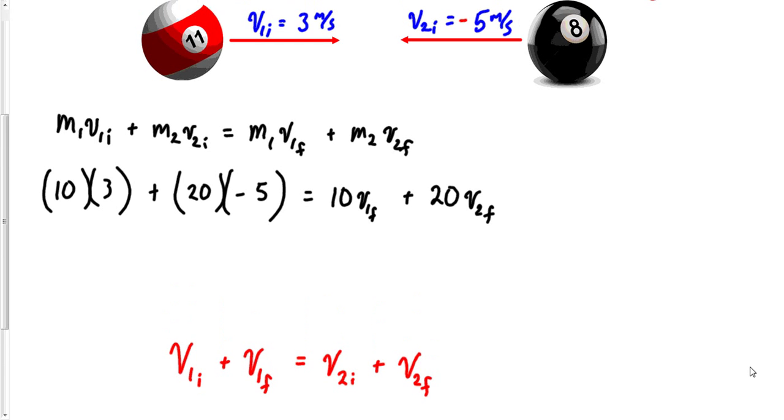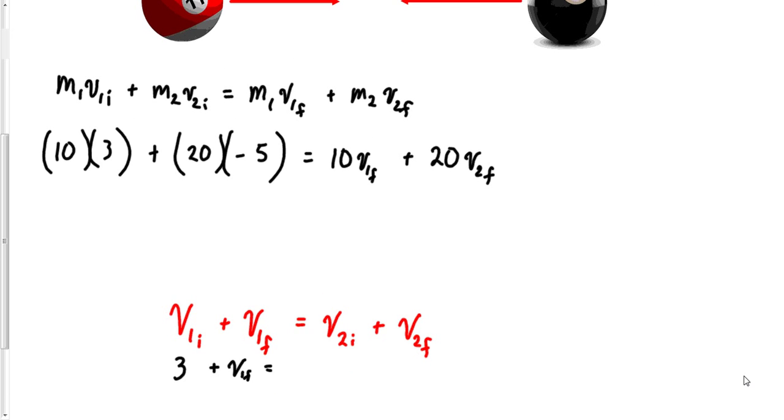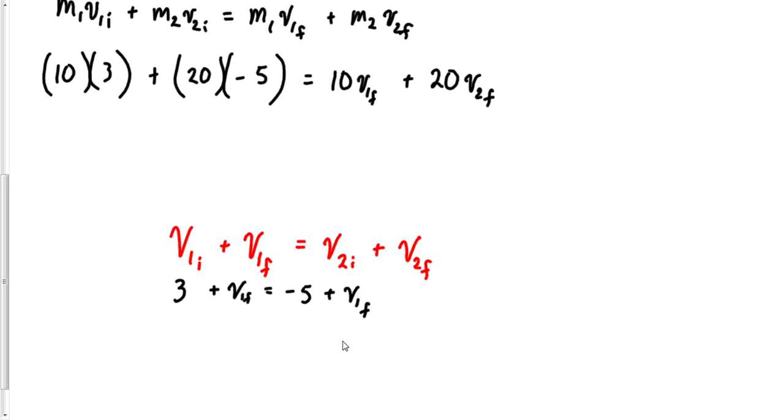So can we use this equation in combination with what we've done? Well yeah. v1 initial was 3, v1 final we do not know, equals v2 initial which was negative 5 plus v2 final. Y'all the physics is over. I have two equations and two unknowns so this works. I just need to solve one of these equations. I'm going to solve this guy down here for v1 final. Please notice I've screwed up where that says v2 final, that should still be v2 final here.